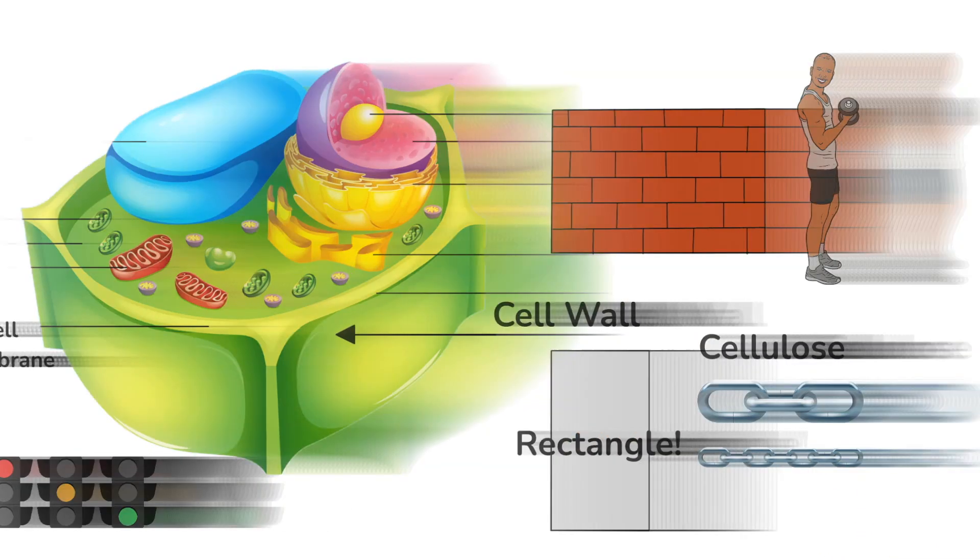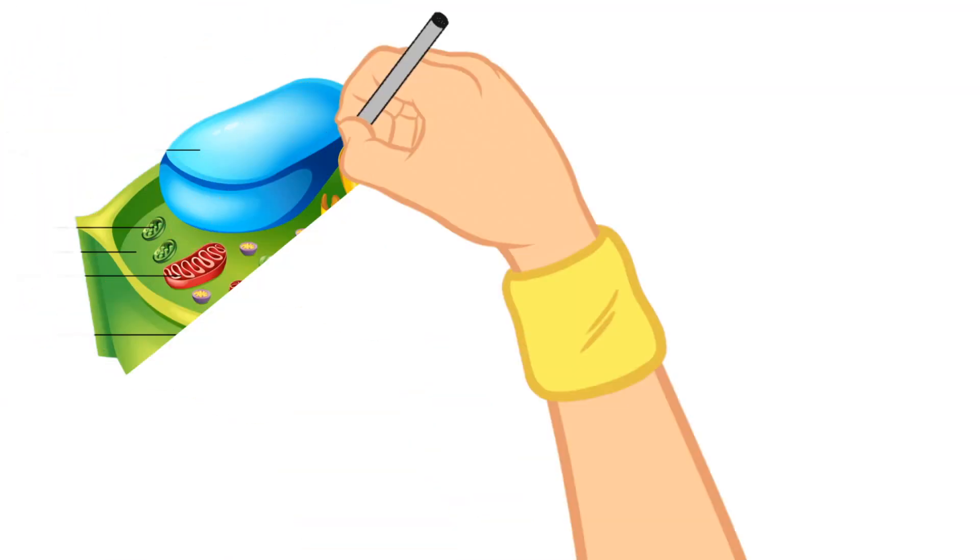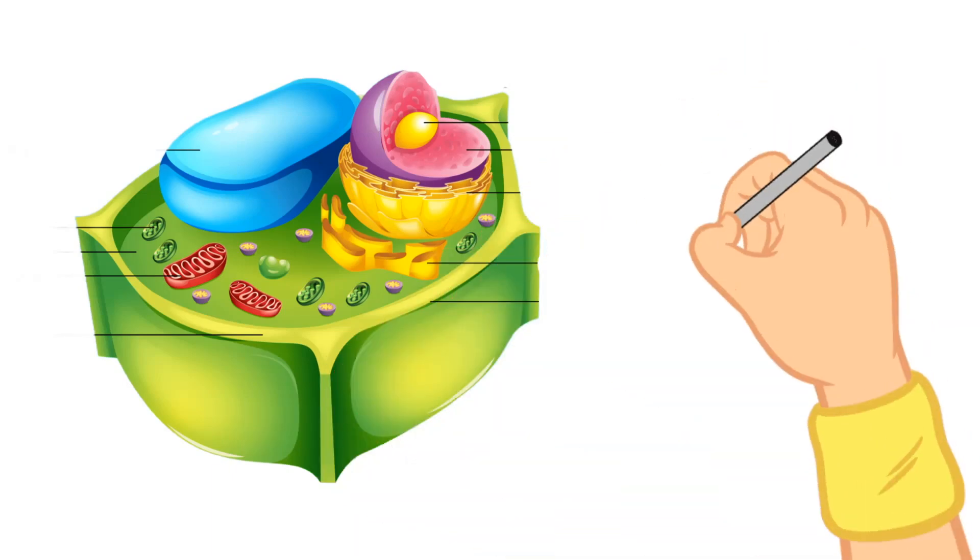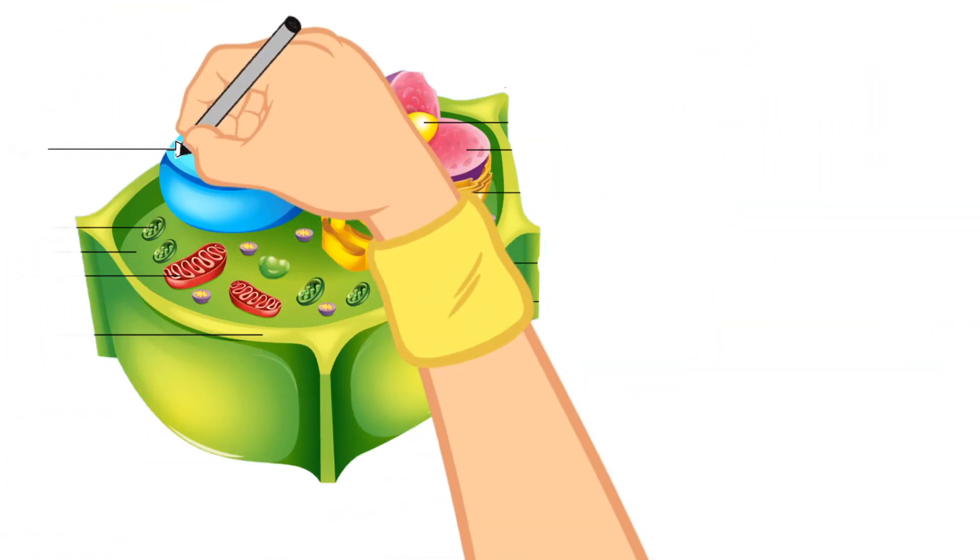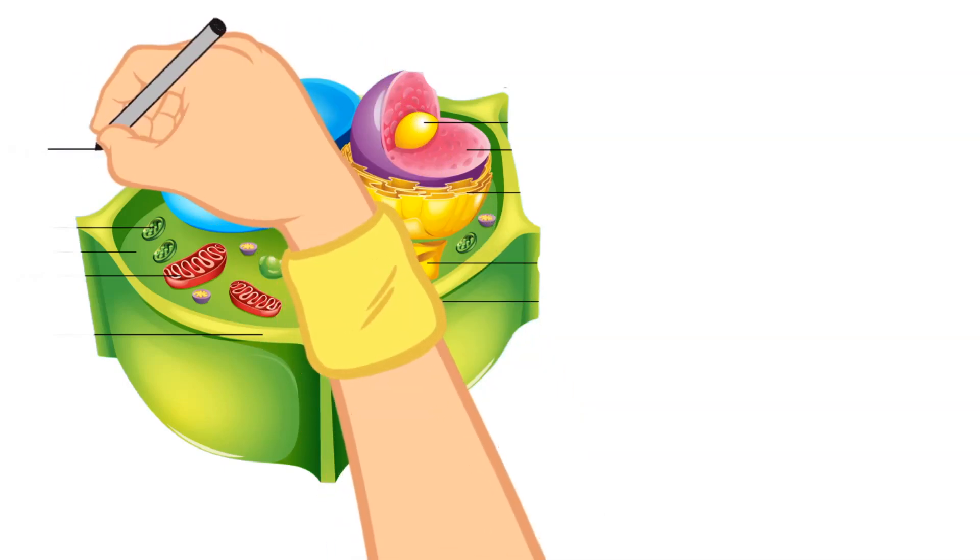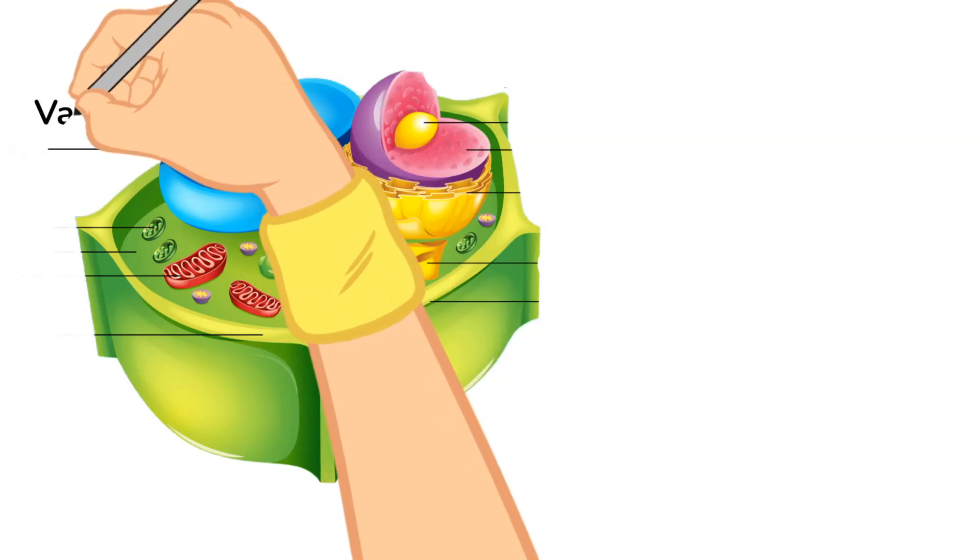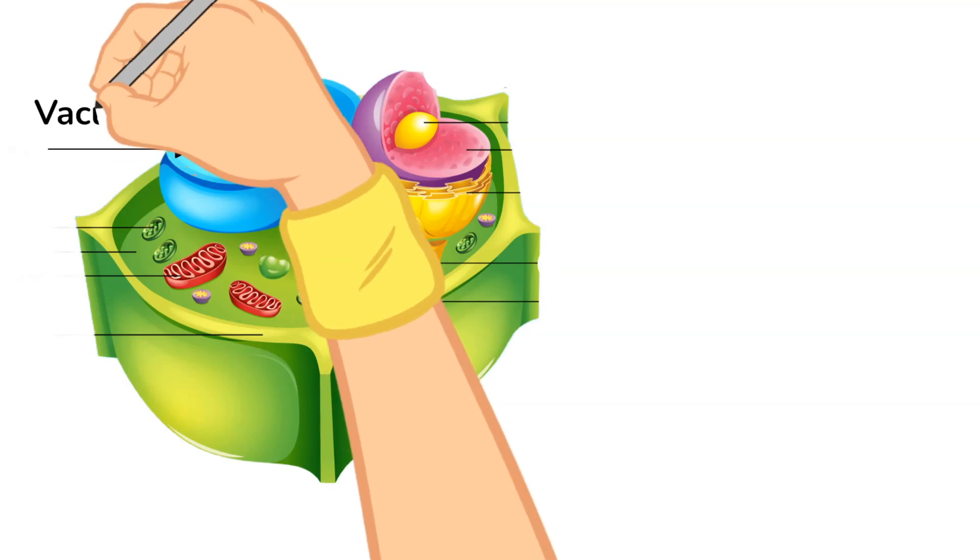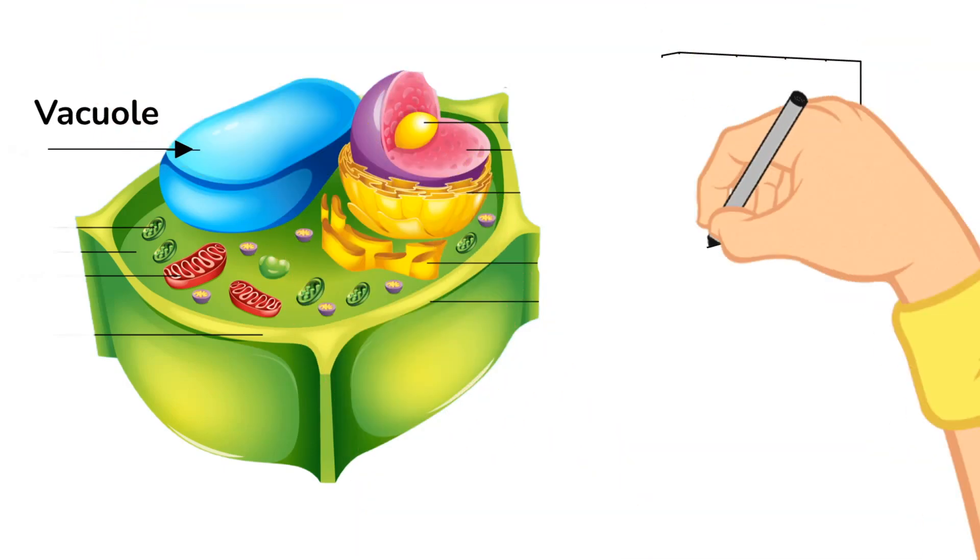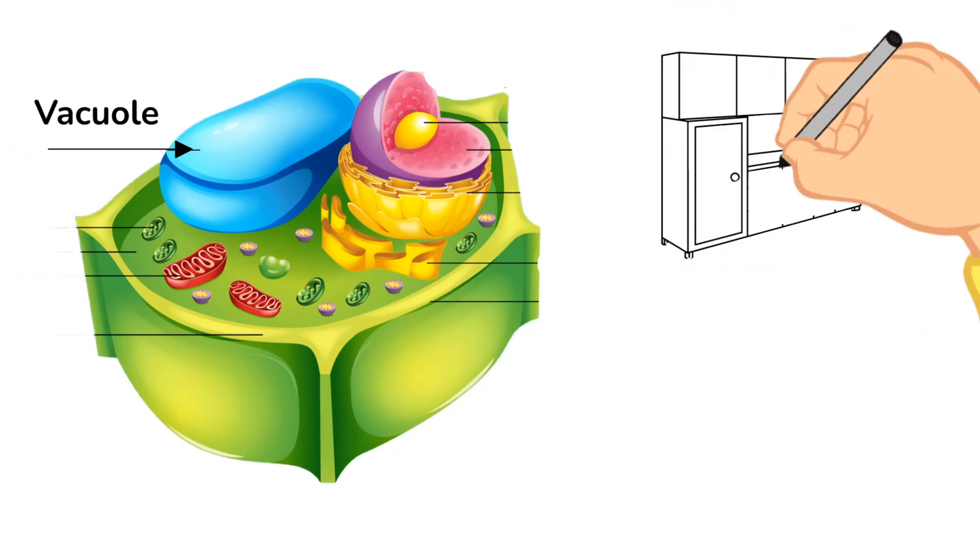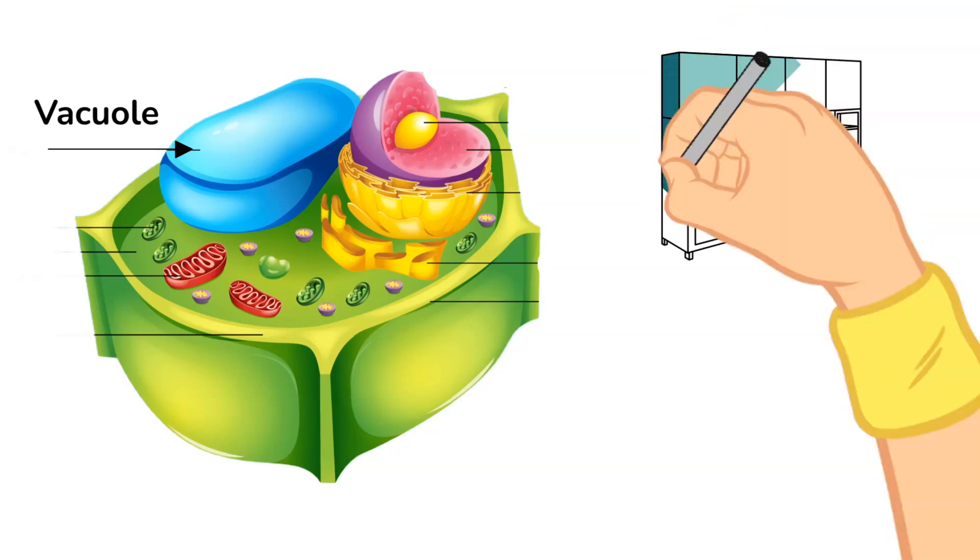Another difference between animal and plant cells is that even though both of them have those organelles called vacuoles, a plant cell's vacuole is much larger, and there is typically only one. So a plant cell has one large vacuole, whereas animal cells can have many small vacuoles. And remember a vacuole is used for storage, but in plants it can also be used for maintaining the shape of the cell.